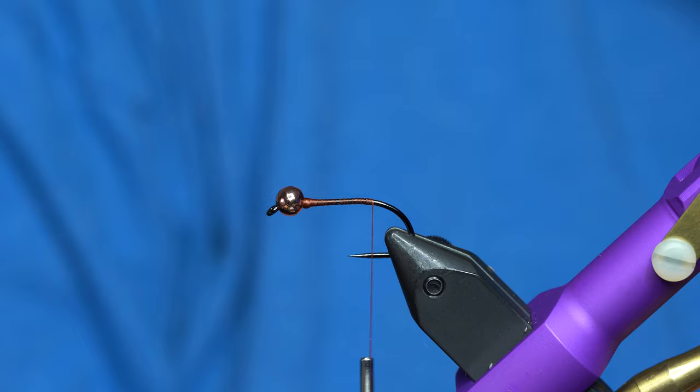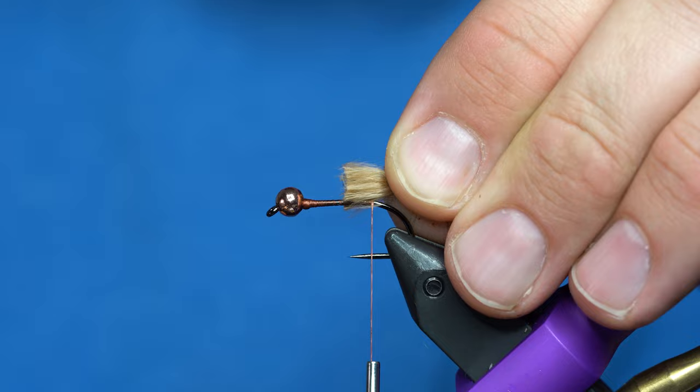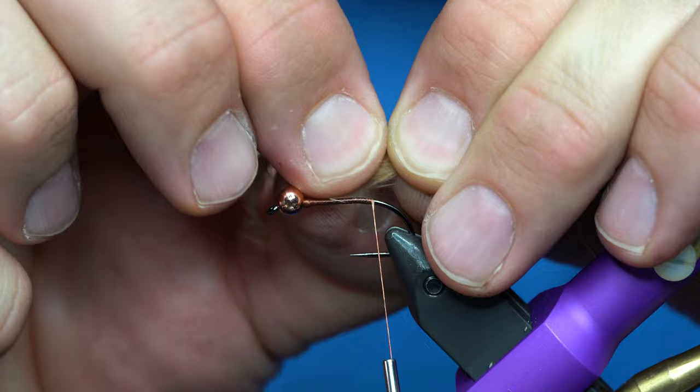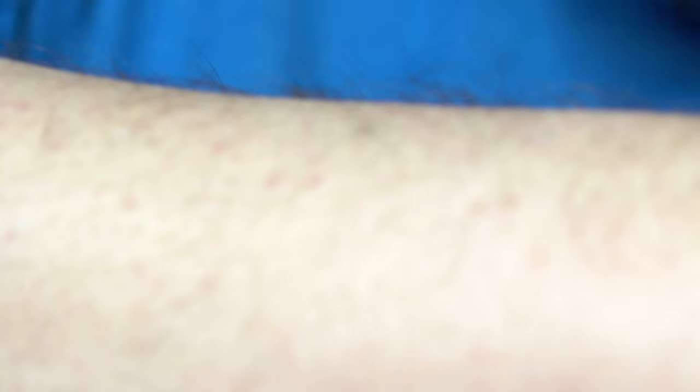So, what I'll do is I'll trim that off a little bit longer. We showed this technique earlier on a different video. But if you take your marabou and you take your thumbnail and you just pull out all those little marabou fibers, which actually makes a cool dubbing, take that out.